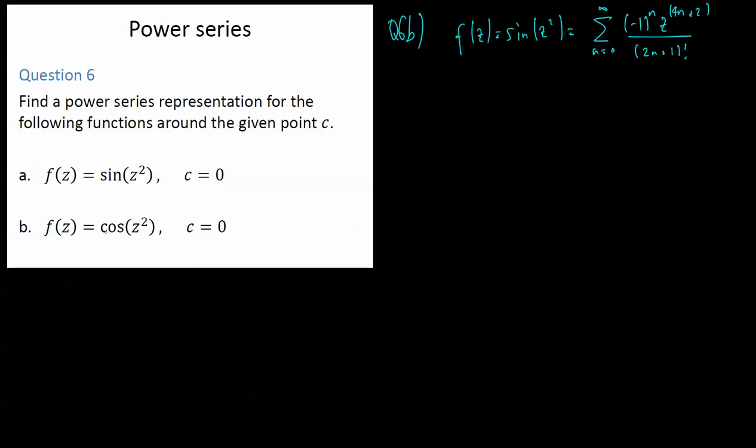Instead of doing the same thing for cos(z²), which we could easily do, what I want to show you is I want to get cos(z²) from this thing. So let's take the derivative with respect to z of sin(z²) and what do I get? Well, I've got this chain rule here so I get 2z, the derivative of sin(z²) which is cos(z²).